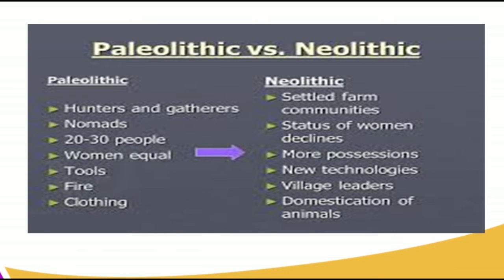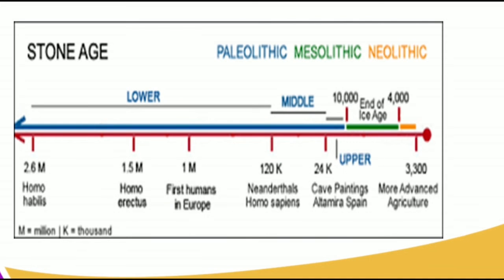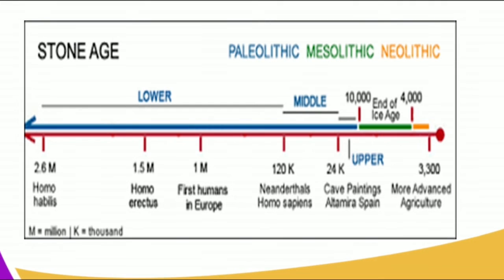In the Neolithic, more possessions were found, new technologies were made, there were village leaders, and animals were domesticated. In the Paleolithic there was fire and clothing. The timeline shows the progression from the Stone Age to the Neolithic period, starting from Homo habilis, then Homo erectus, Neanderthal man, all the way to Homo sapiens sapiens, who advanced agriculture. These periods can be categorized as Lower, Middle, and Upper Paleolithic — corresponding to Old, Middle, and New Stone Age periods.